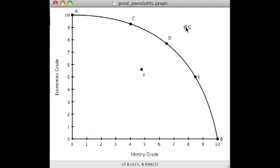On the other hand, point G up here is a point that has high grades in both economics and history, but because it lies beyond the curve, it's a place you can't attain. Your scarce resources, in this case your study time, are limited. There's only so many hours you have available to you. There's no way you can get out to G unless you somehow increase those scarce resources.